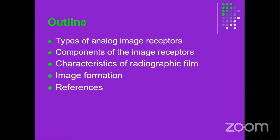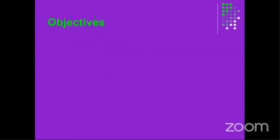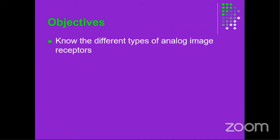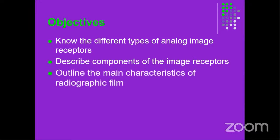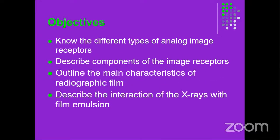These will be the objectives of this lecture. Objective one is to know the different types of analog image receptors, and to describe the components of each image receptor. You should also be able to outline the main characteristics of the radiographic film, and describe the interaction of the X-rays with a film emulsion.